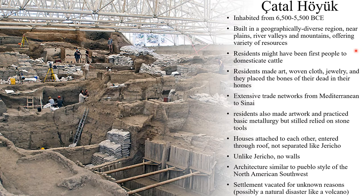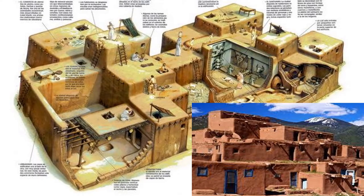For some reason, the settlement of Chatalhuyuk was abandoned around the year 5500 BCE. Scientists and scholars do not agree exactly on why the settlement was abandoned, although some think that a natural disaster — possibly a volcano — may have caused the citizens of Chatalhuyuk to abandon their homes. Here is an image of daily life in Chatalhuyuk. The residents enter their homes through holes in the roof and traverse the roofs using ladders. You can see the similarity between Chatalhuyuk's architecture and the architecture used by some Native American peoples in the North American Southwest.